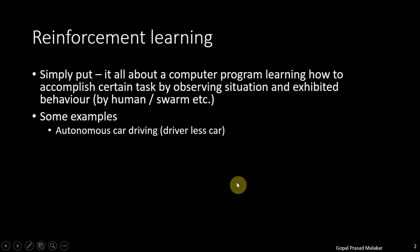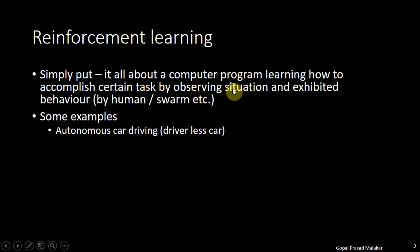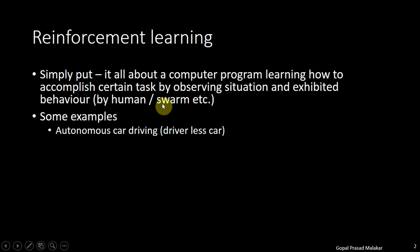Autonomous car driving — a human driver can exhibit certain behavior by observing the traffic signal, the traffic situation, the angle of the road, and other road conditions. These are the situations, and the driver's responses are the exhibited behavior.